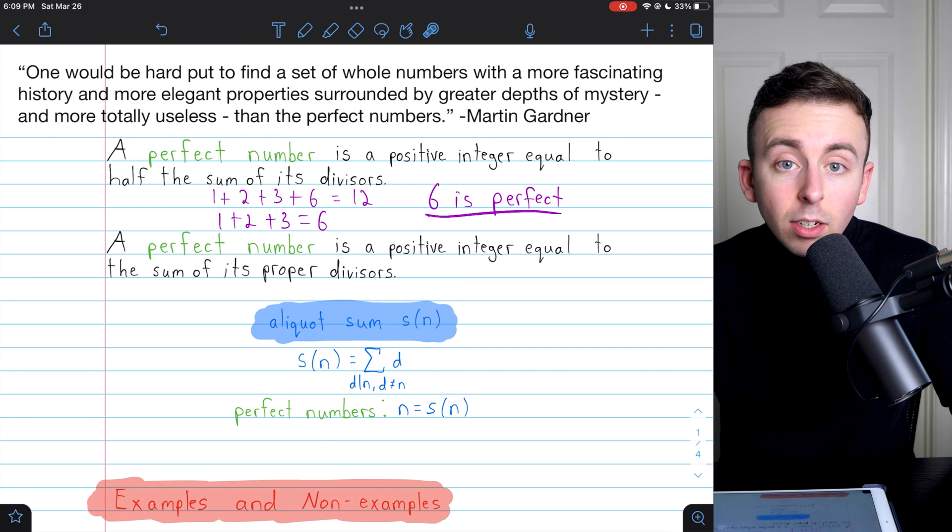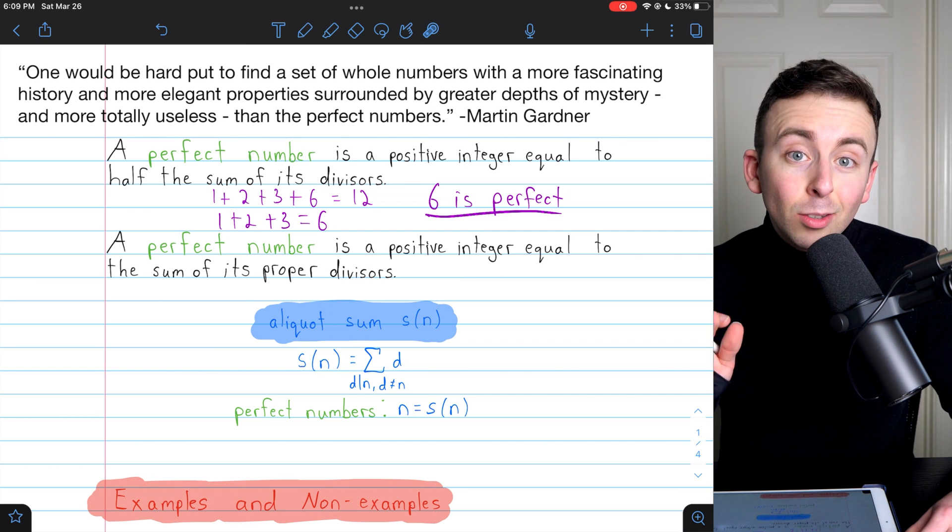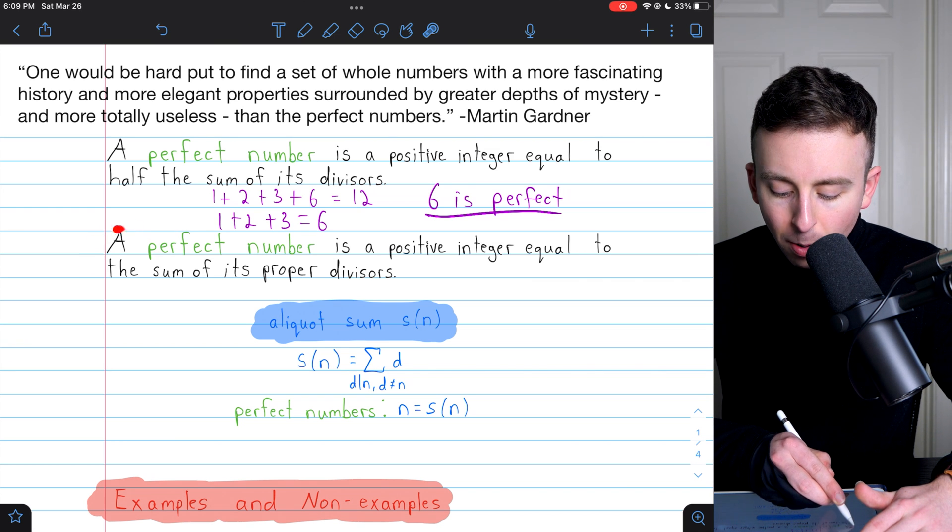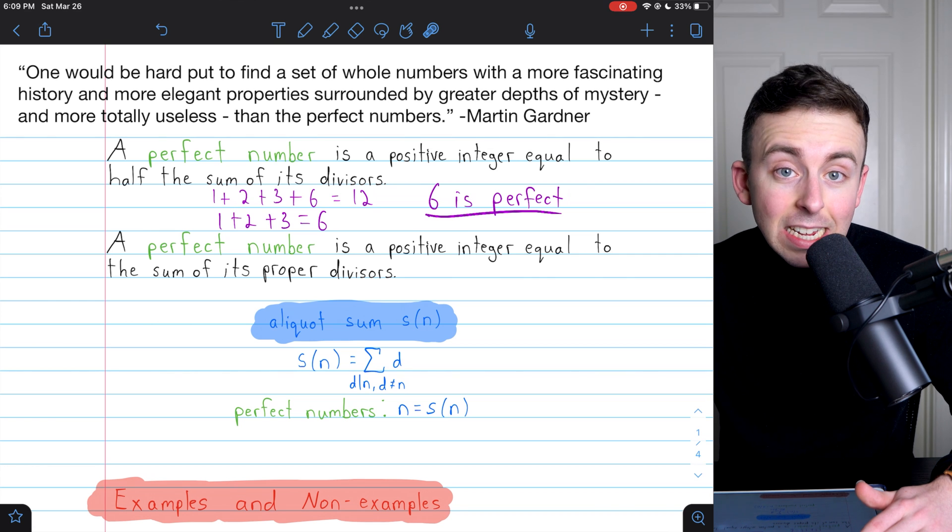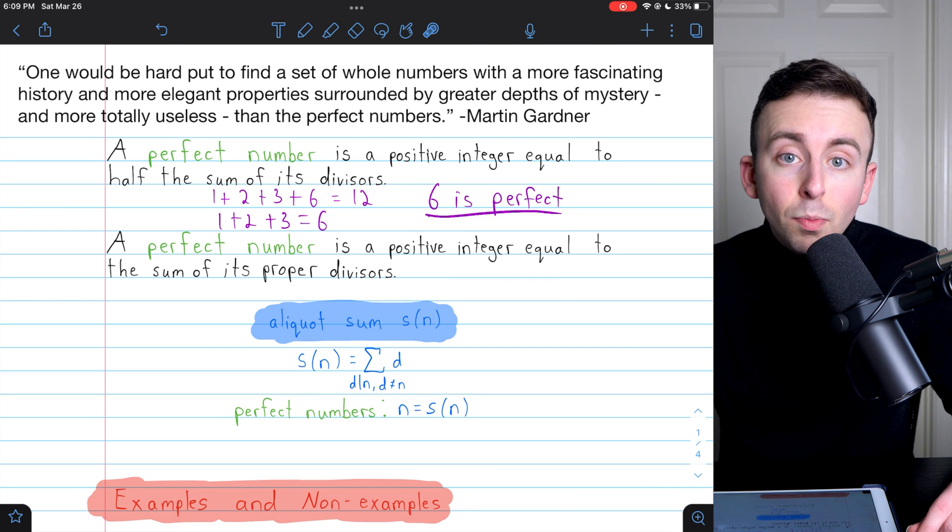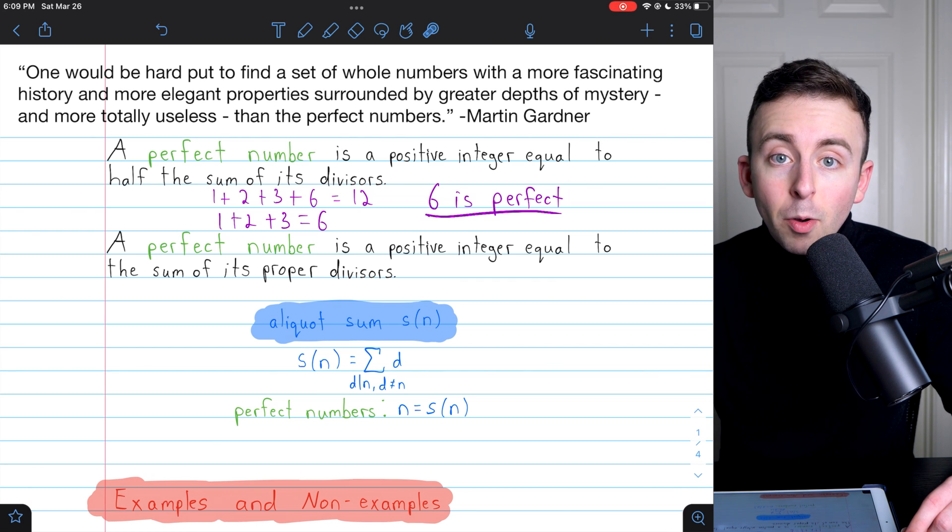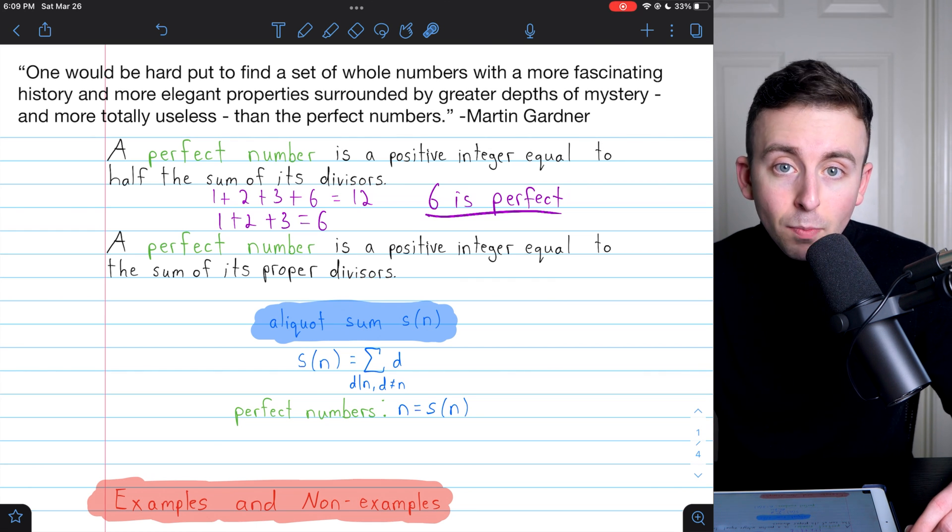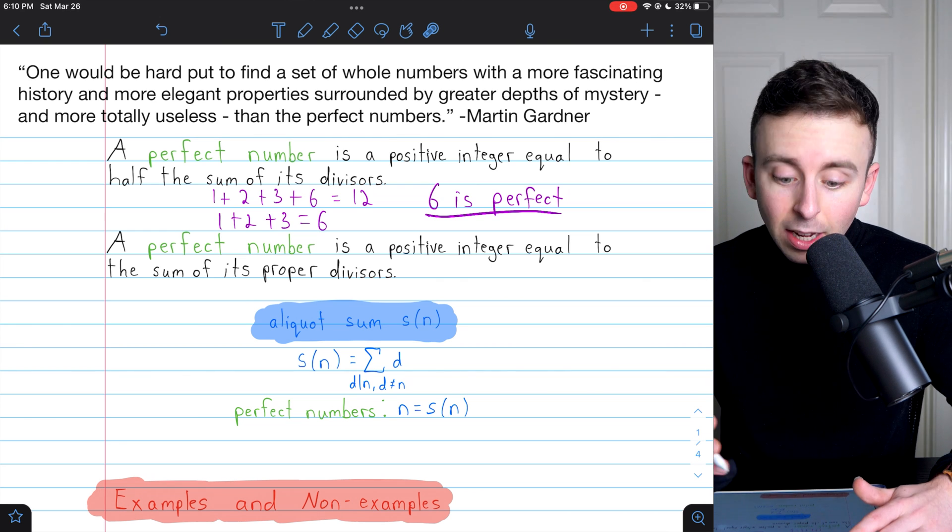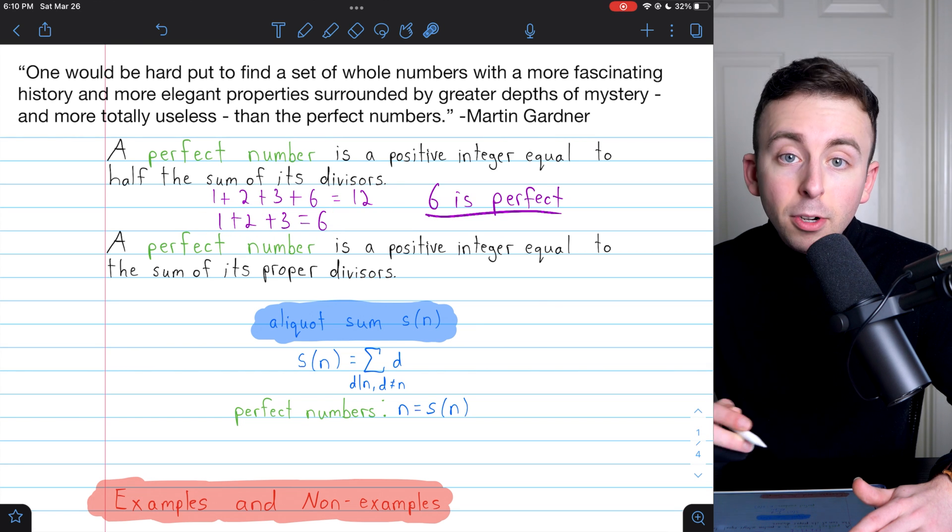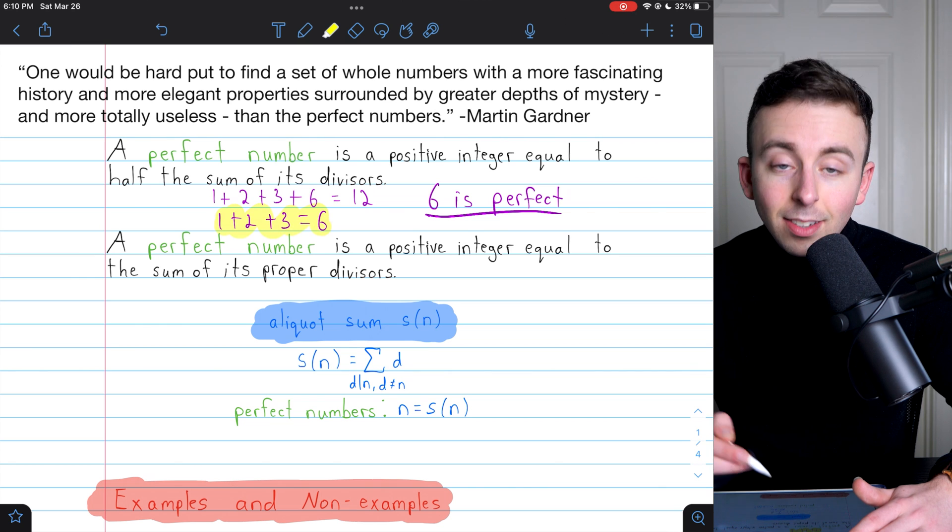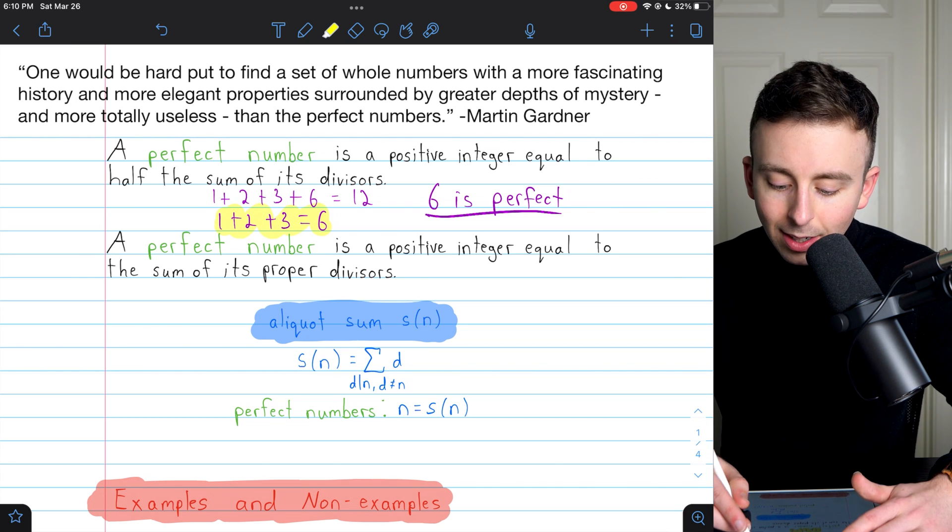And indeed, we could define perfect numbers like that too, where we exclude the number itself. Here's that definition. A perfect number is a positive integer equal to the sum of its proper divisors. If we only include proper divisors, then for a perfect number, the sum of those proper divisors will precisely equal the number. Just like we saw with 6. When we added the proper divisors, excluding 6 itself, the sum was exactly 6. So this is an equivalent definition.